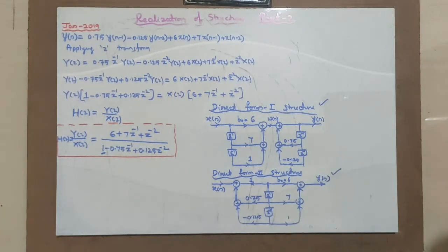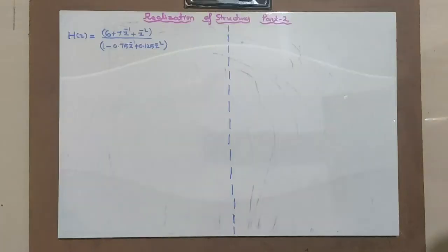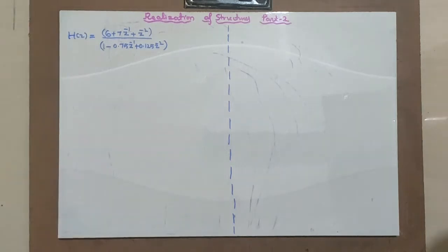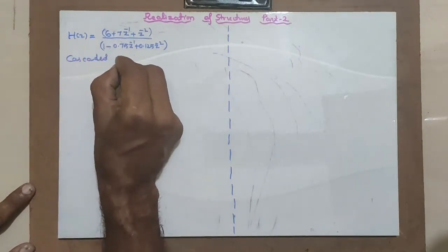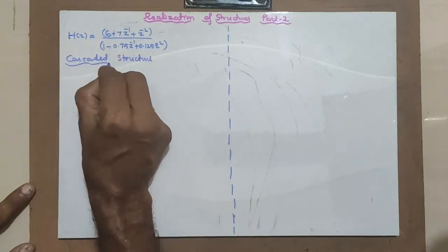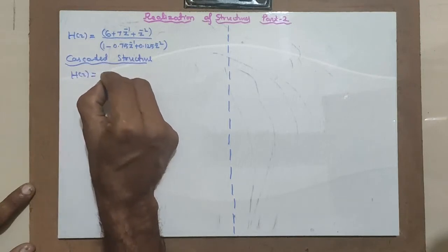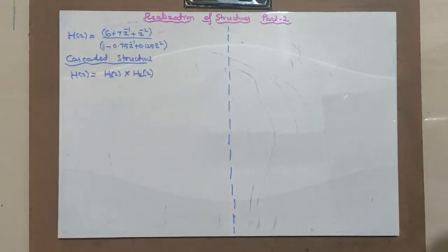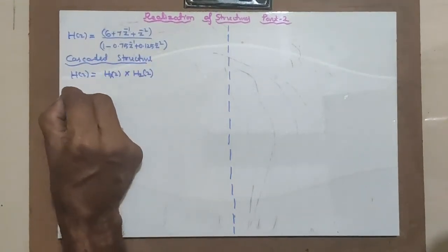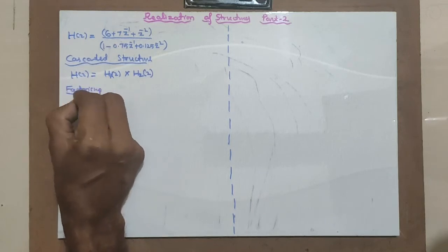Let us now go ahead with cascaded and parallel structures. In the previous board we found H of Z from the difference equation and implemented direct form 1 and form 2. Now let us implement cascaded structure. For cascaded structure, H of Z must be expressed as H1(Z) multiplied by H2(Z). Hence I need to factorize H of Z. Factorizing is required.